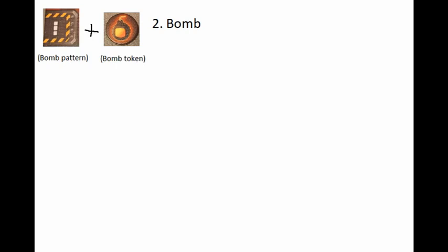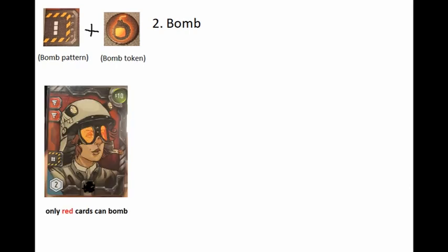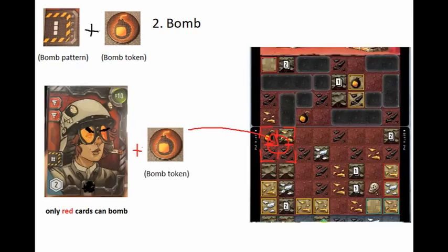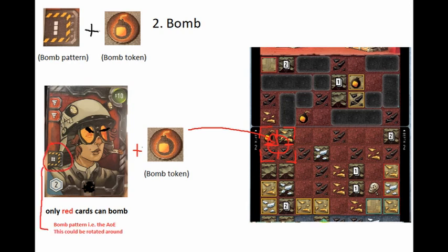Bombing is an alternate action that you can do, but only with red cards though. You use a single red card plus a bomb token to bomb a space matching the shape that is listed on the bottom left of your red card.